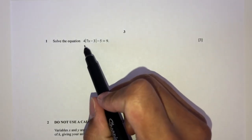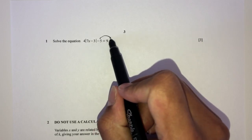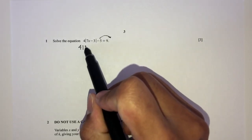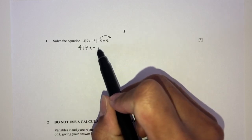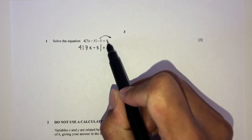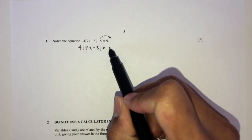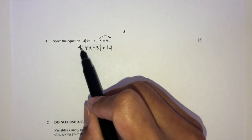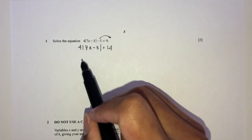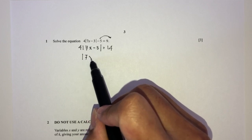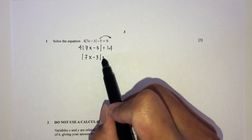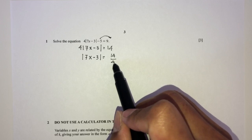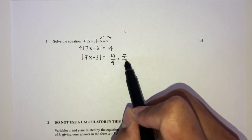So here we have this. We can send this one over here — that will be 4. So 7x minus 3, that will be 9 plus 5 which is 14. And then we have 4 here. We can send this over by dividing by 4 on both sides. That will become 14 over 4, which is 7 over 2.